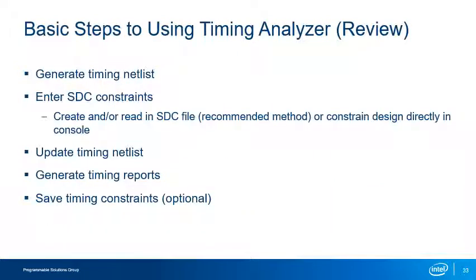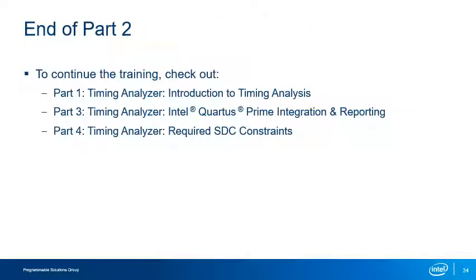Those are the basic steps to using the Timing Analyzer tool: generate your timing netlist and add constraints, then update the timing netlist to apply them, generate timing reports to verify results, and save any new constraints. This concludes Part 2 of the training. If you missed Part 1 or would like to continue to Parts 3 or 4, you can register for free at the link shown. To learn about additional resources available for Timing Analyzer, continue to the next slide.